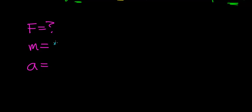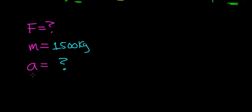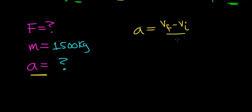The mass of the car is given as 1,500 kilograms, but they don't tell us directly what the acceleration of the car is, so we're going to have to figure it out ourselves. We'll go back to our definition of acceleration, which says that acceleration is the change in velocity per change in time — that is, how fast the car is speeding up.